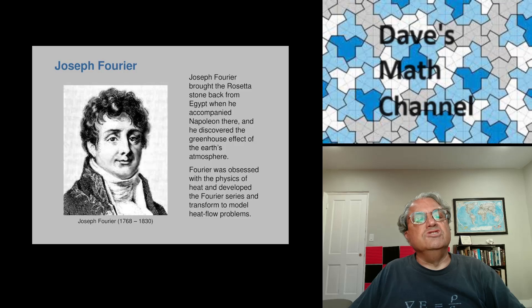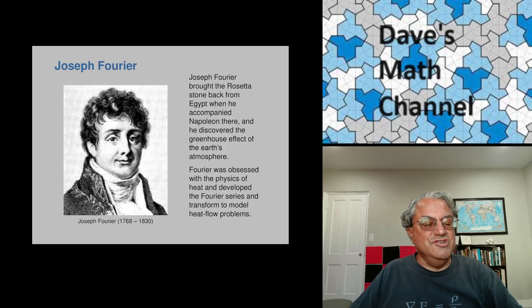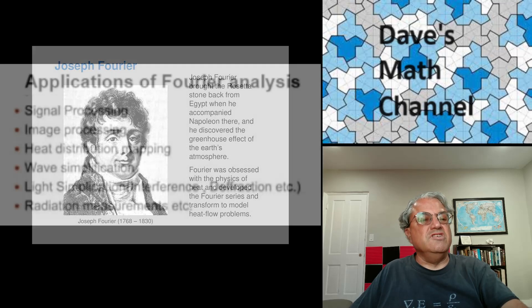He also did some work in Egypt under Napoleon. He brought back the Rosetta Stone, which was a very famous archaeological discovery that allowed us to understand some ancient languages in ancient Egypt. So anyway, he was a very, very famous mathematician and physicist, but I think he was most famous for Fourier analysis. So let's get into that.